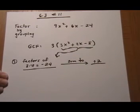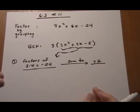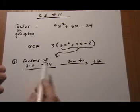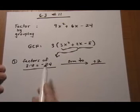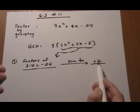And when we're all done with our final binomial times binomial answer, we'll put the GCF of 3 out in front of it. All right, so first we look at factors of first times last, 3 times minus 8, minus 24, that add up to the middle plus 2.